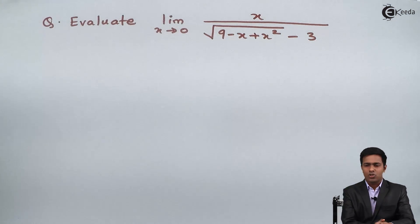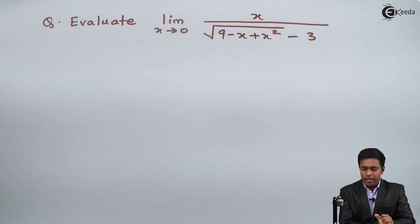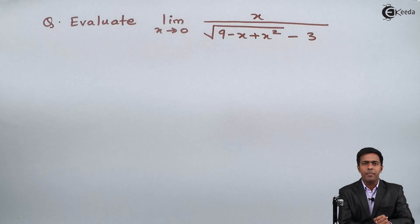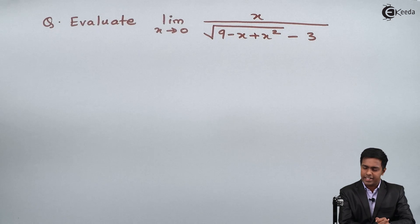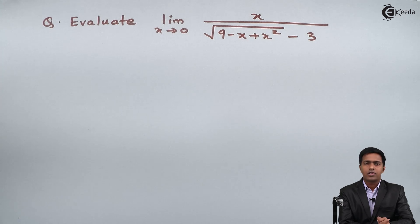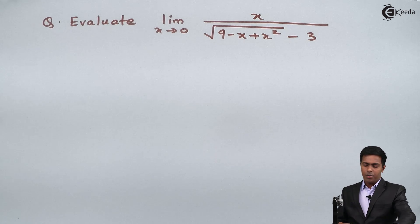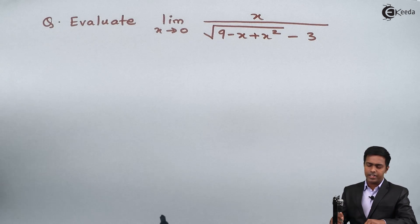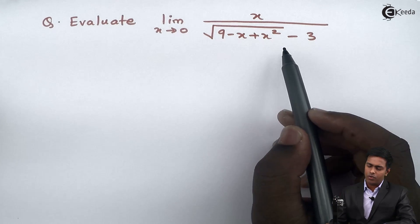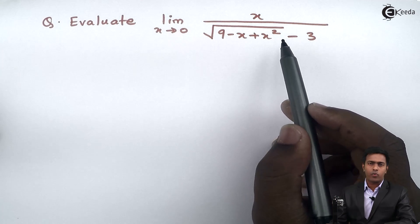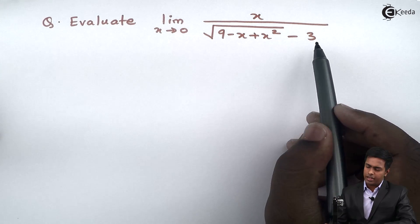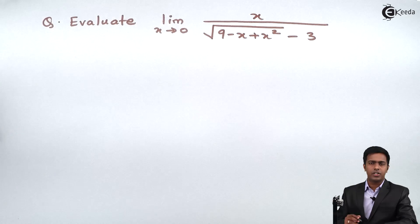Hello friends. In this problem we have to evaluate the limit as x tends to 0 of x upon square root of 9 minus x plus x squared, minus 3. Before starting with the solution, if we observe the given question, we have an algebraic function.